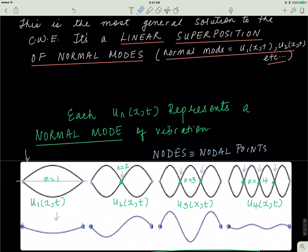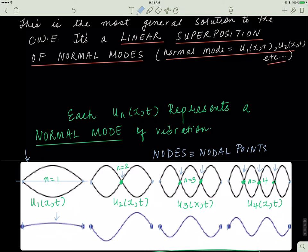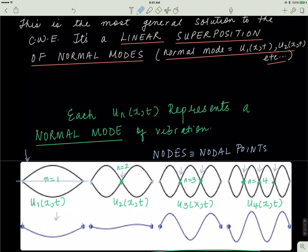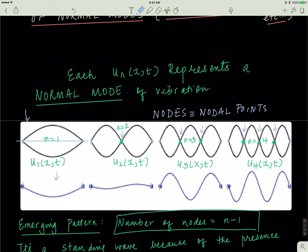So nodes or nodal points are basically, they're points that don't really move in these waves. Because of the presence of these nodal points or these nodes, I call these waves standing waves because they're standing at the nodes. Everywhere else, they're going up and down, but at the nodes, these are simply standing.